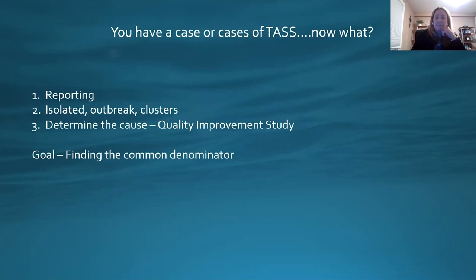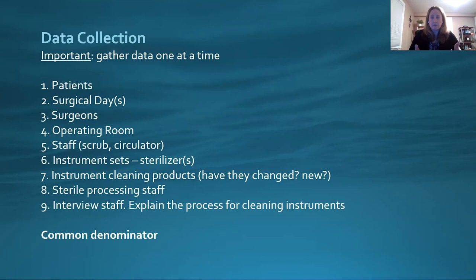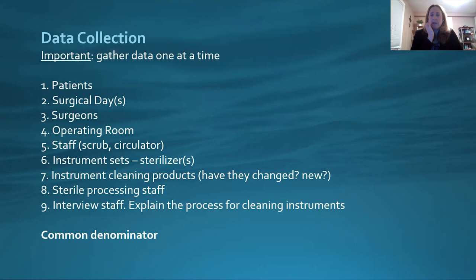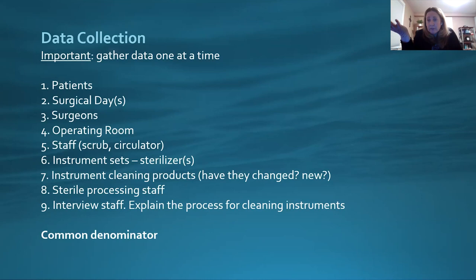Let's talk about a good quality assurance study and how you can go back and find the cause. What's very important is that you gather your data one data point at a time — if you do more than one, you're not going to be able to narrow it down. Pull your patients, look at your schedule, make a graph of every patient that developed TASS. Look at what surgical days they were on — you could have outbreaks over two days with different surgeons. Pull the surgical days, all patients, what days they had surgery, what surgeons — is it one particular surgeon or multiple surgeons?